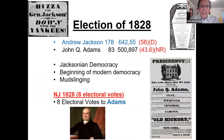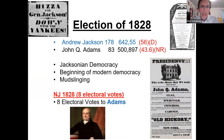The election of 1828 was Jackson's revenge. He came back and won big — 56% — in the dawning of Jacksonian democracy. He had more common people supporting him, the beginning of modern democracy. A lot of mudslinging occurred in this election as well.